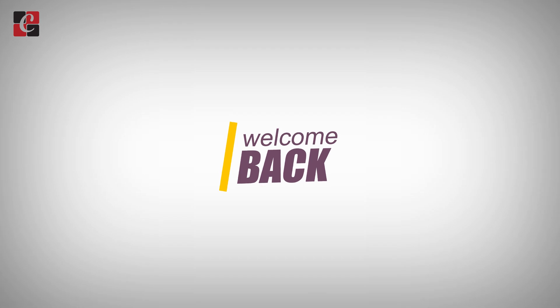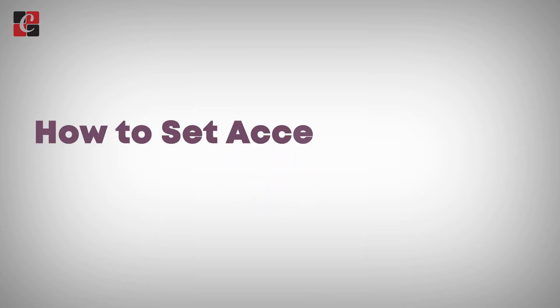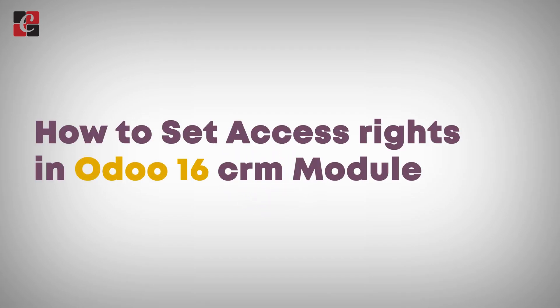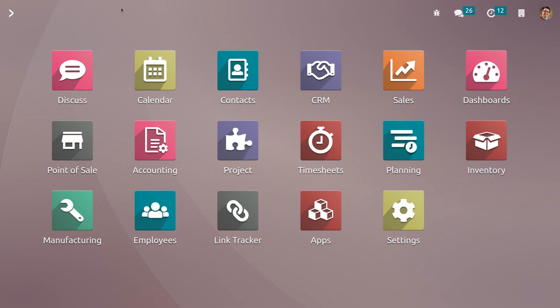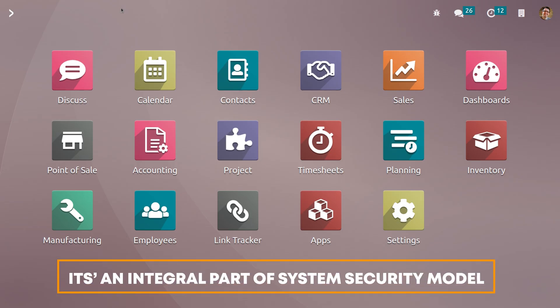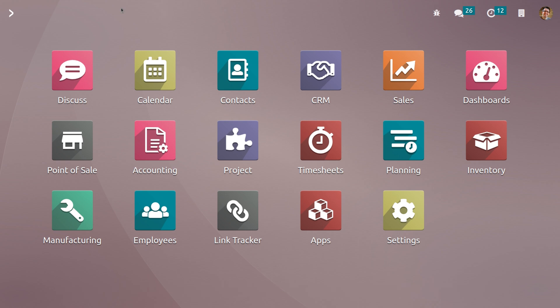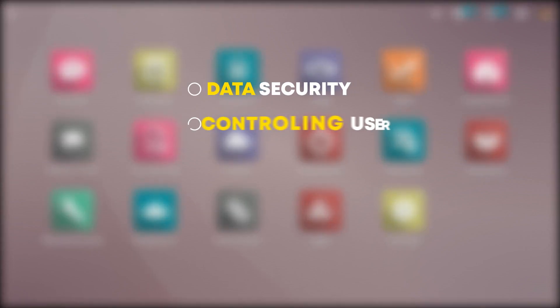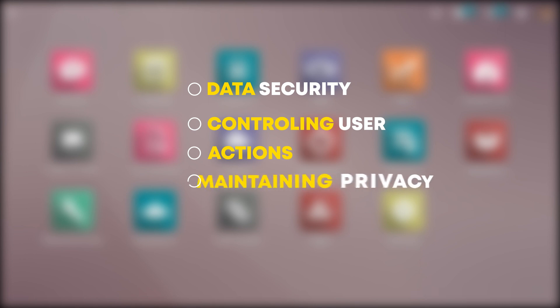Welcome back to a new video. Let's discuss how to set access rights in Odoo 16 CRM module. In Odoo, access rights are an integral part of the system security model. They determine the level of access and permissions granted to users for different modules, records, and actions within the Odoo ERP system. Access rights play a crucial role in ensuring data security, controlling user actions, and maintaining privacy within an organization.